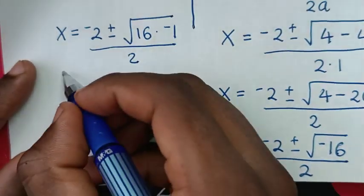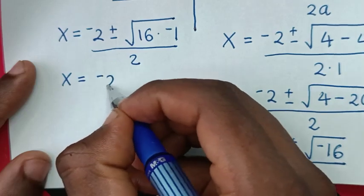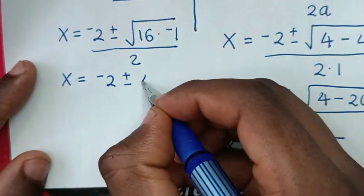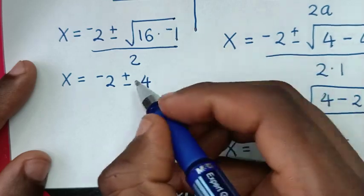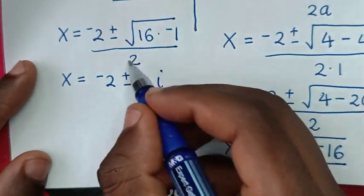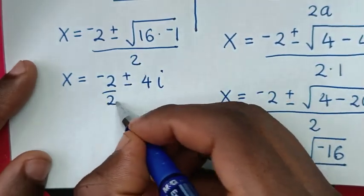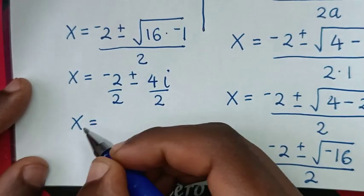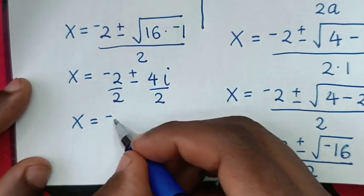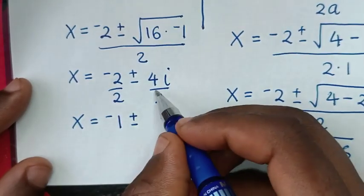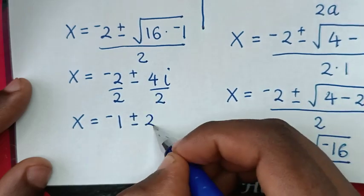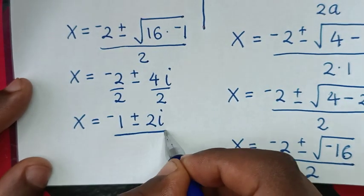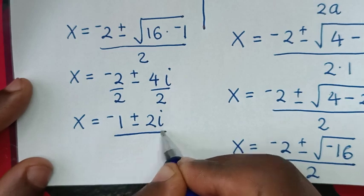So it will be x equals negative 2 plus or minus the square root of 16 which is 4, times the square root of negative 1 which is i, then divided by 2. So x equals negative 2 divided by 2 which is negative 1, plus or minus 4i divided by 2 which is 2i.